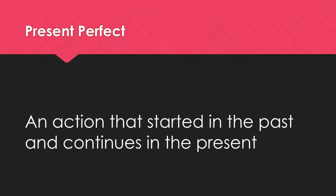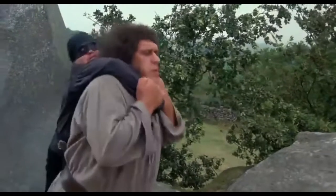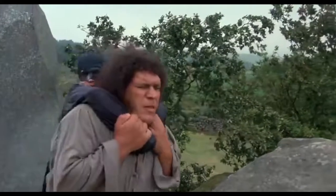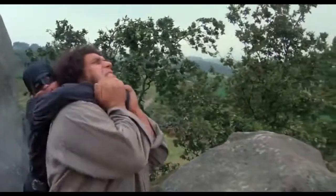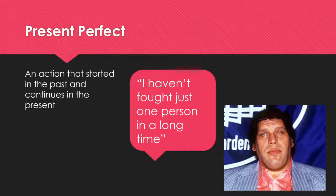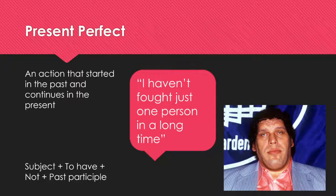We use the present perfect to talk about actions or situations that started in the past and continue in the present. For example: 'I haven't fought just one person in a long time.' Here we have the subject 'I' plus 'to have' plus 'not' plus past participle of 'fight,' which is 'fought.'